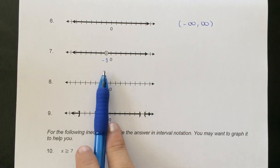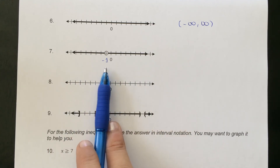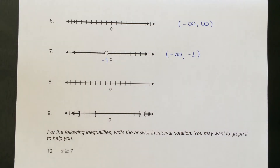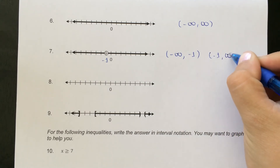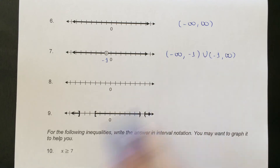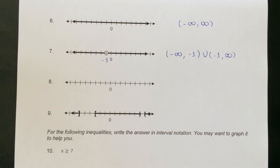The best way to handle a hole at negative 1 is to break it in half: look at all numbers to the left of negative 1 and all numbers to the right. Numbers to the left go from negative infinity up to negative 1 — not including negative 1 because there's a hole. Then from negative 1 up to positive infinity — again not including negative 1 — with a union between them. This represents all numbers except negative 1. Number 8 has nothing graphed, so we represent that as the empty set: a circle with a line through it, meaning no solution.